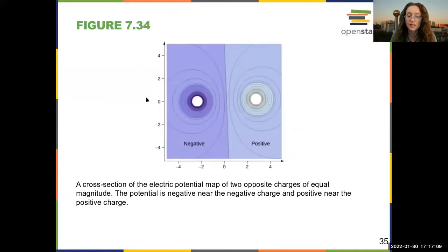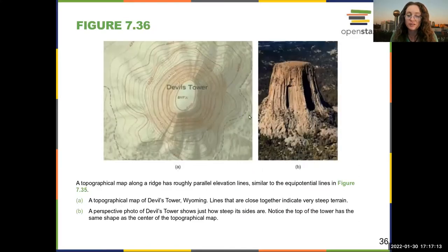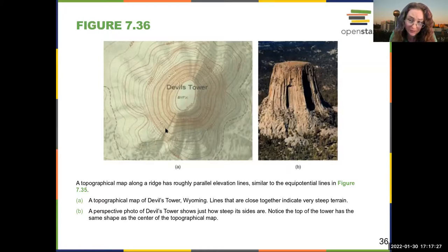You could show it like this as well. These color maps are a little harder to read. This is just like if you had a topographical map of some type of object, where the parallel elevation lines can help you navigate when you're hiking.